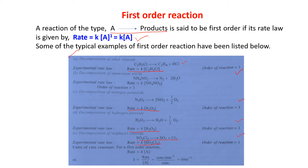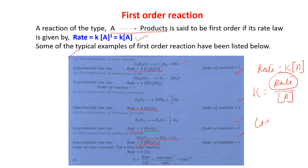Units of rate constant for first order reaction: since rate = K[A], we get K = rate / [A]. The unit of rate is concentration · time⁻¹ divided by concentration, and the concentration terms cancel, giving K the units of time⁻¹ (e.g., s⁻¹).